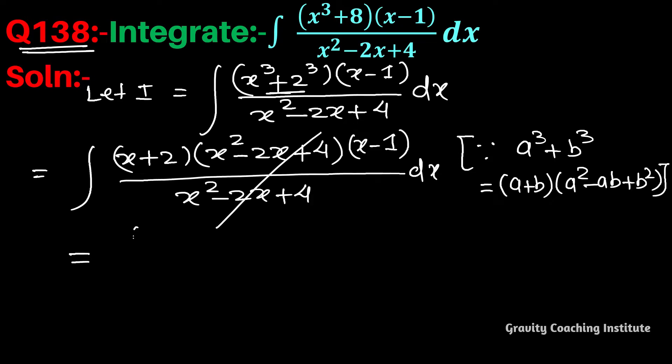So it equals the integration of, when we multiply this, we get (x² + x - 2) dx. This equals the integration of x² dx plus the integration of x dx minus 2 times the integration of dx.